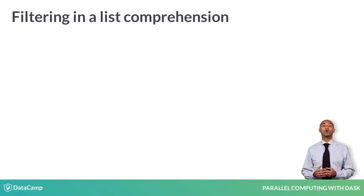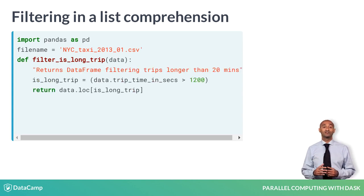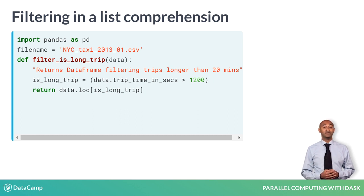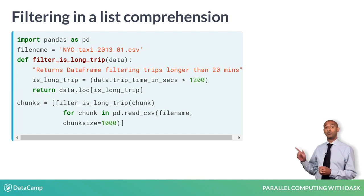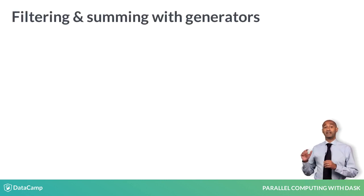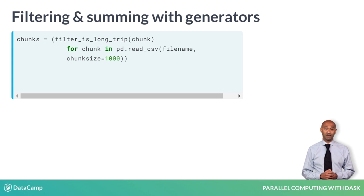Recall our work from before. We iterated over 1,000 line chunks from a CSV file of taxi ride data. We then filtered the individual chunks, applying a function within a list comprehension. If we replace the enclosing brackets with parentheses in a list comprehension, the result is a generator expression.